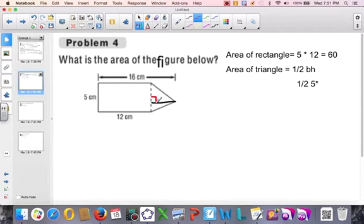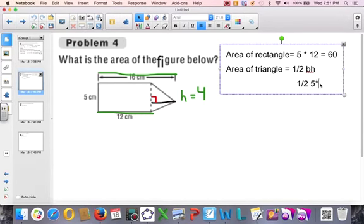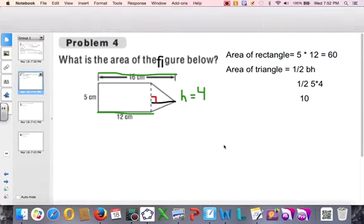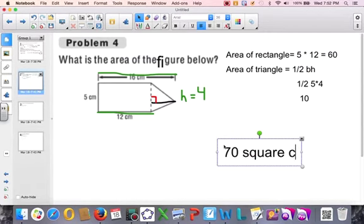Hopefully you see that the base is 5. If you look at it and think for a moment, this height that we need to find the area of the triangle - I know that this is 16, I know that this is 12, so it should make sense that the height of the triangle is 4. That would be 1 half times 5 times 4, giving us 10. Then we add them together and our final answer is 70 square centimeters.